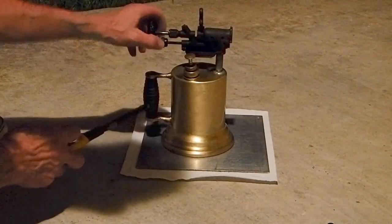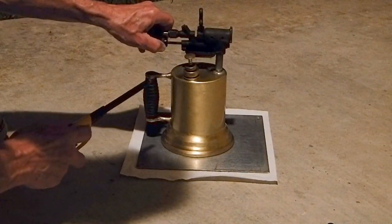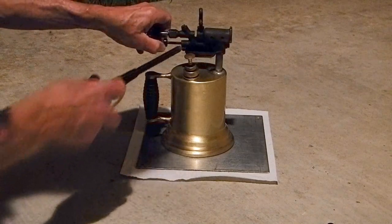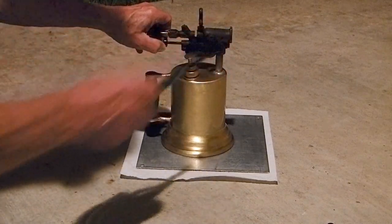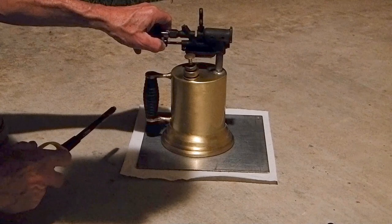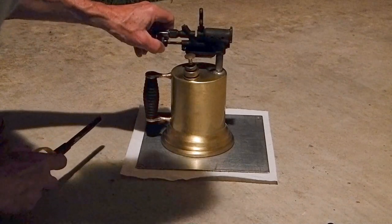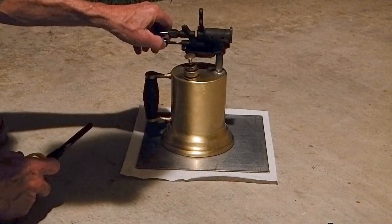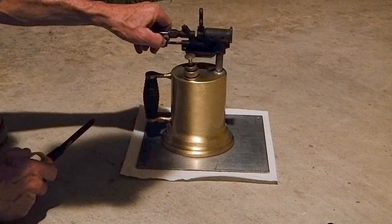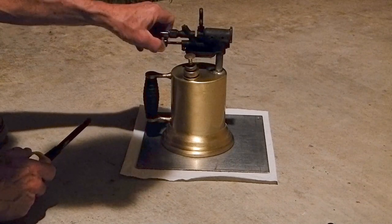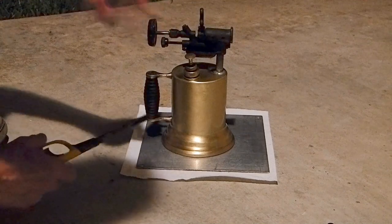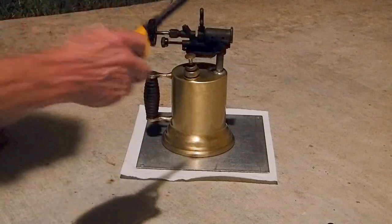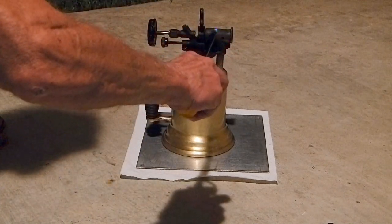This one's got a little valve. You open it up, and it lets a little fuel into here. The purpose of the fuel is it will warm up the burner head so that the fuel will turn into a gas, and then it can burn in the torch.